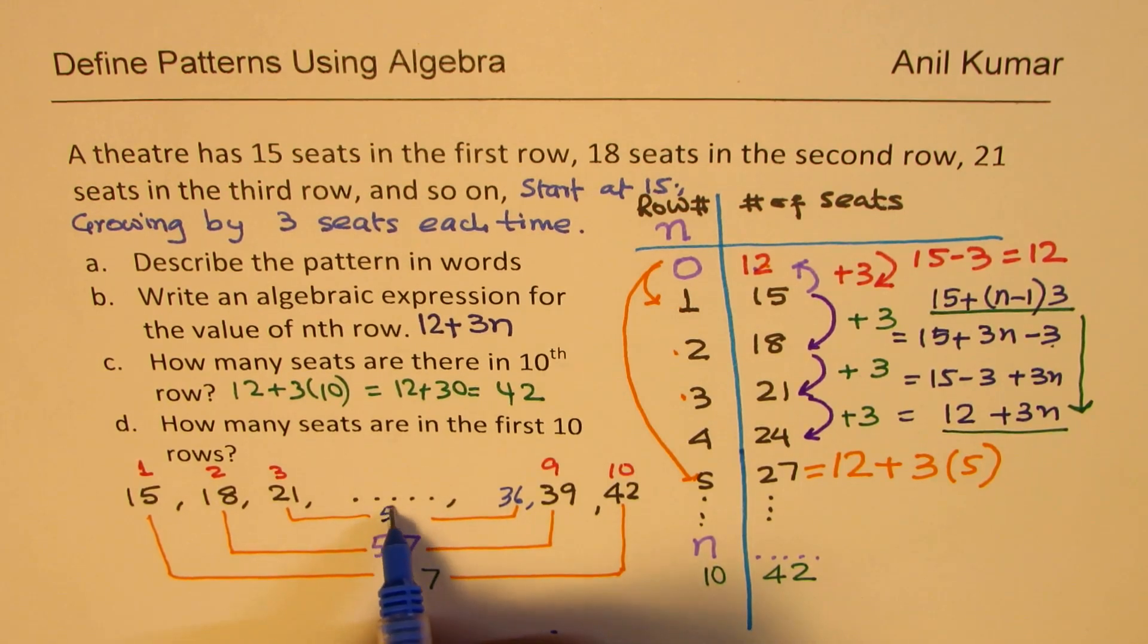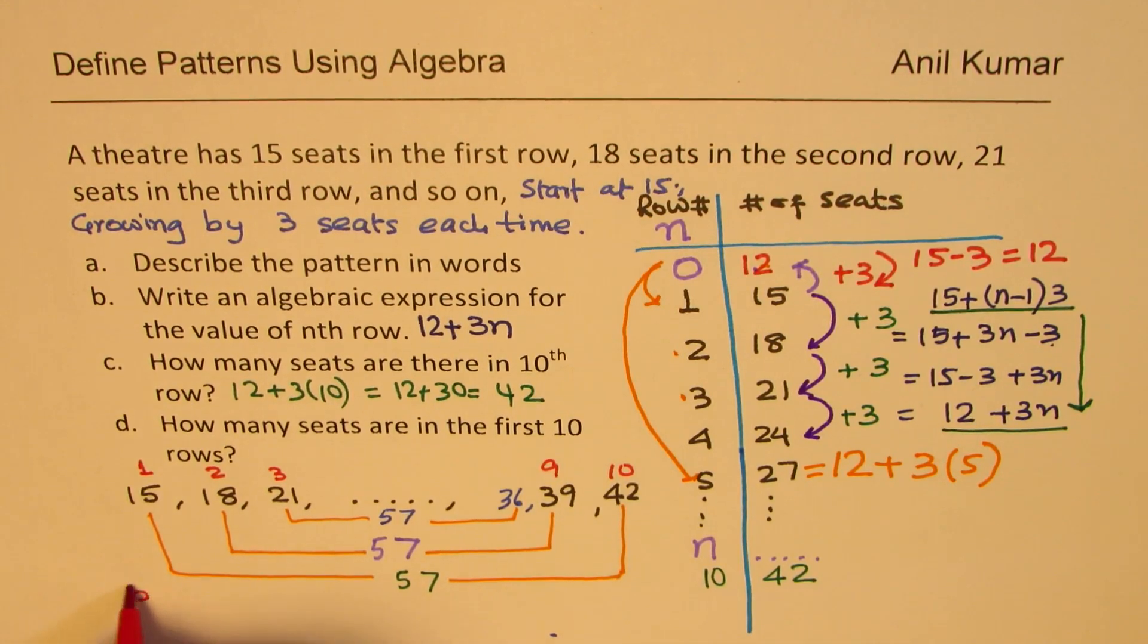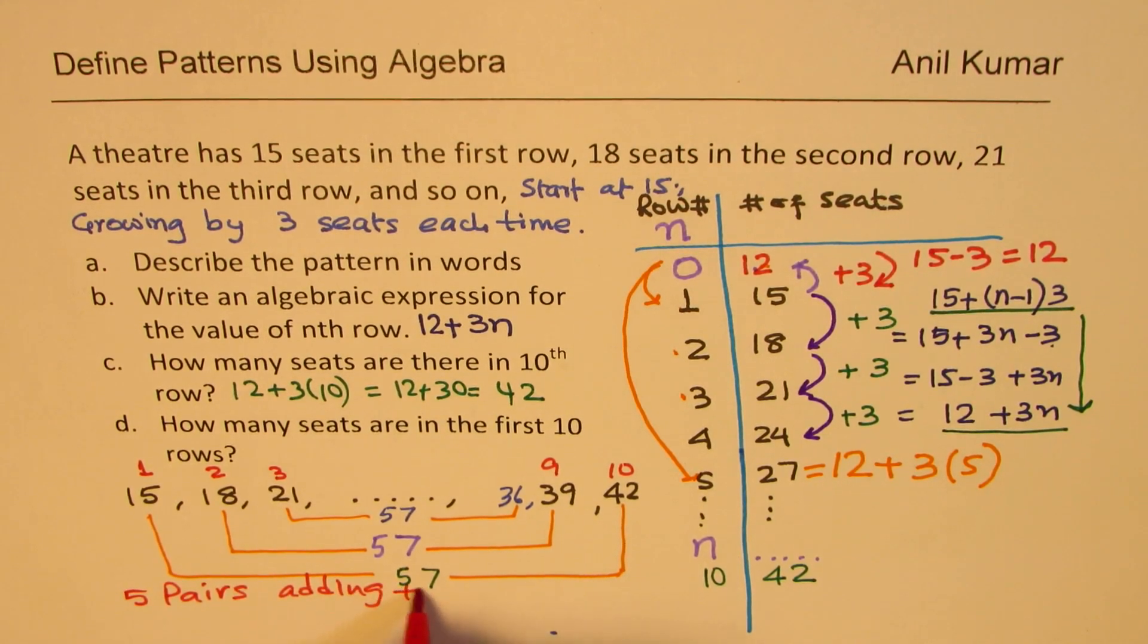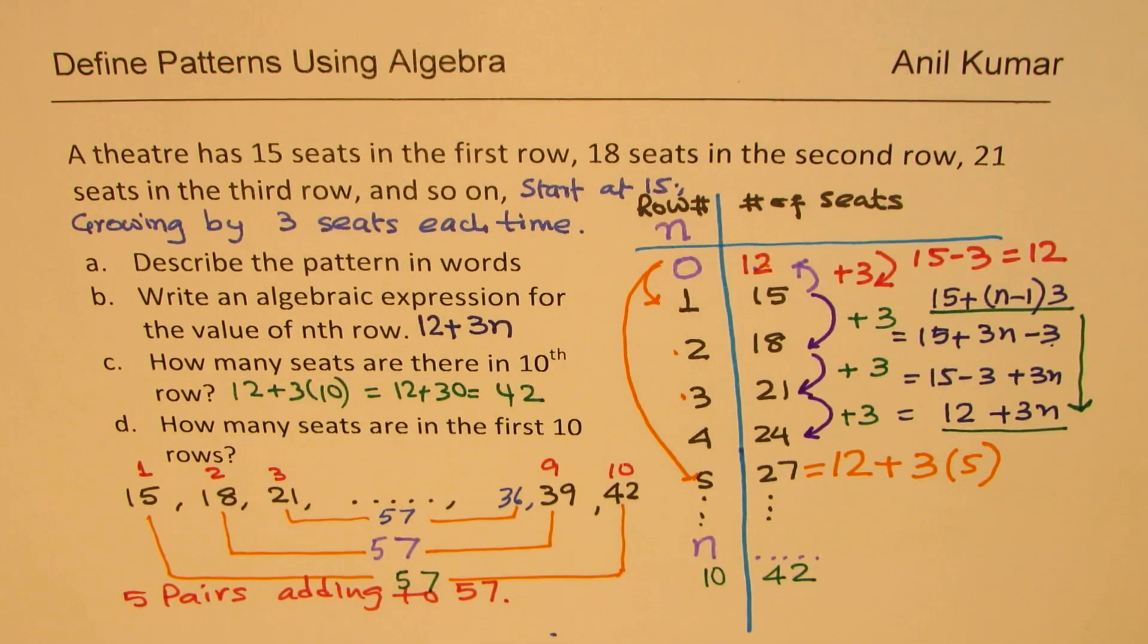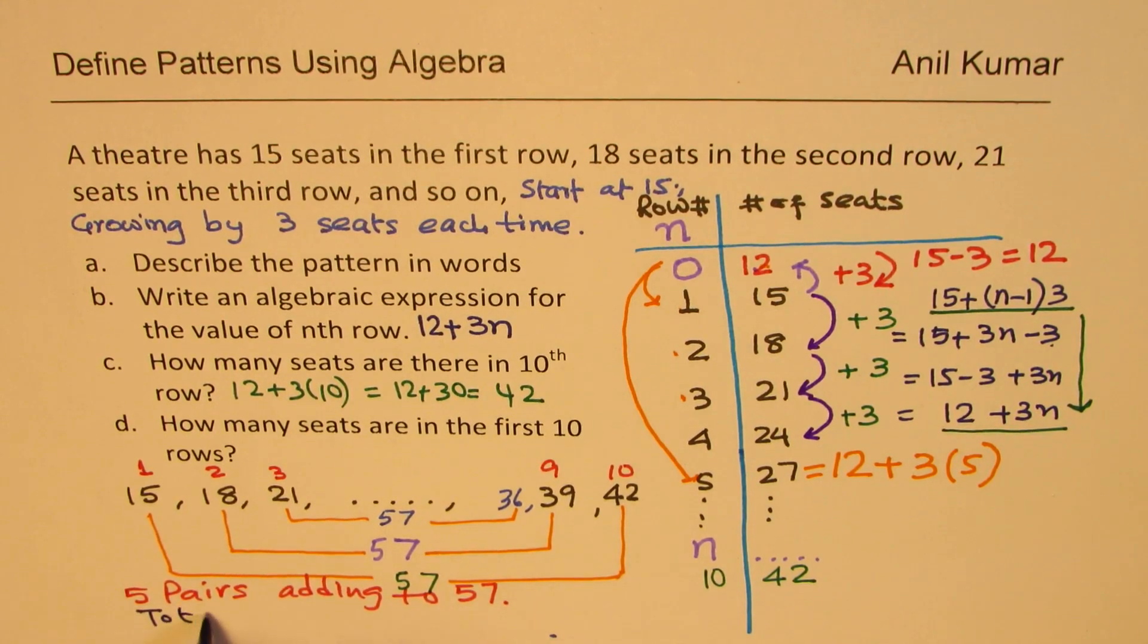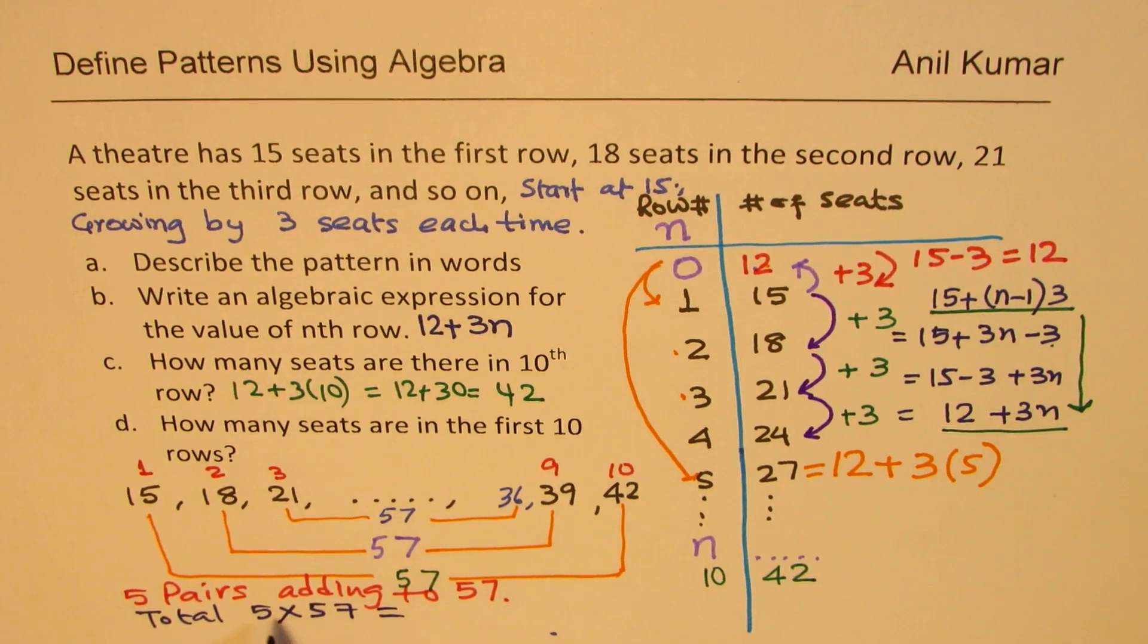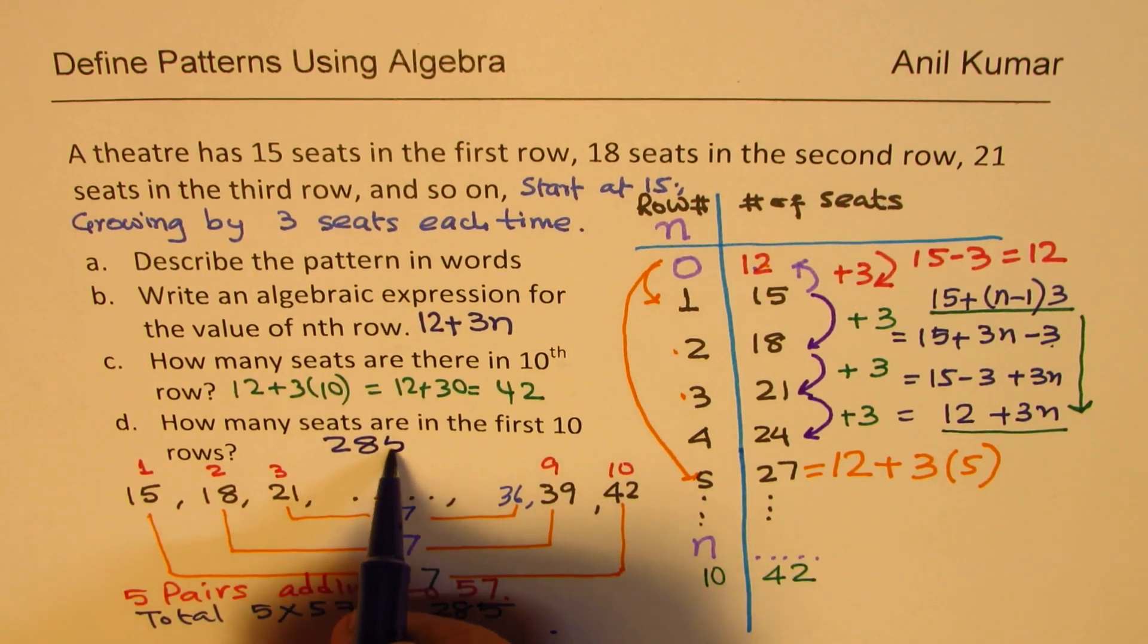So how many 57s will you get? Well, there are 10 numbers and you are pairing them up. So the question is, how many pairs? So we get 5 pairs adding to 57. Then I can easily find the total. So what should be the total? Well, now, the total should be 57, I mean, 5 times. Let me write, 5 times 57. So 5 times 7 is 35, 3. 5 times 5 is 25 and 3, 285. So we should have 285 seats.